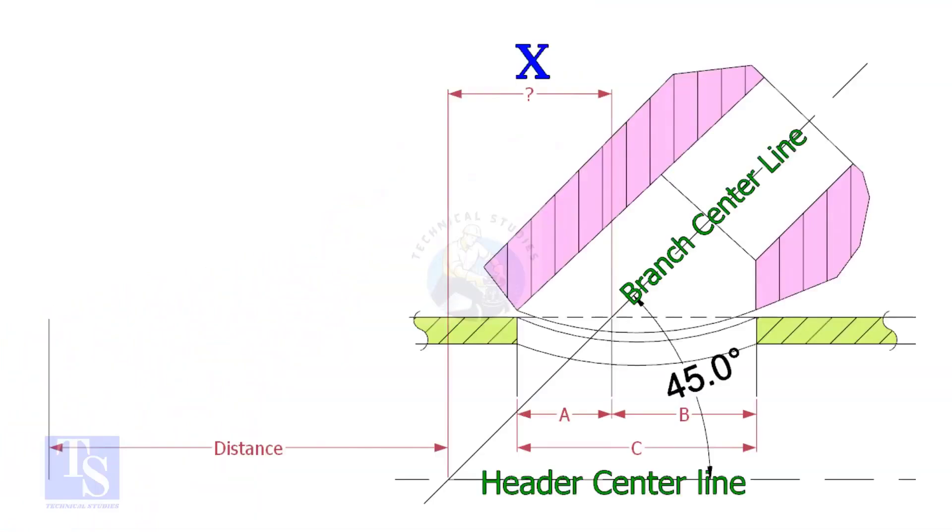Most commonly, laterolettes are used for 45 degree branch connections. In a drawing, the distance to the center of a laterolette is given from a certain point.